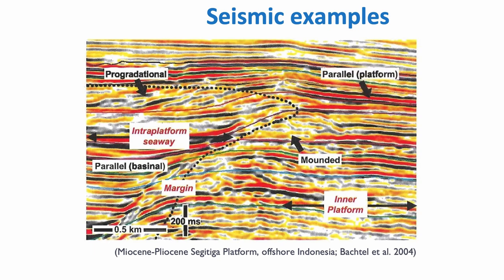The platform is better bedded, and on this example it's very clear that the margin first aggraded, then retrograded. So we have a sense that we're looking at a TST. And then it's followed by progradation, so we would call this the HST of the system.